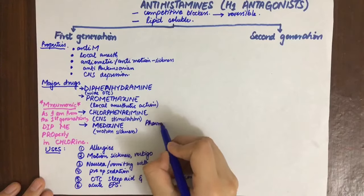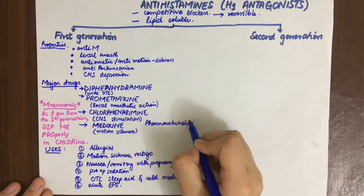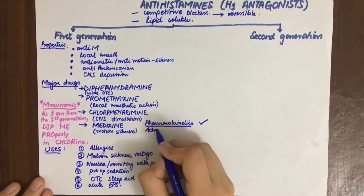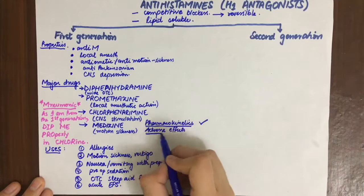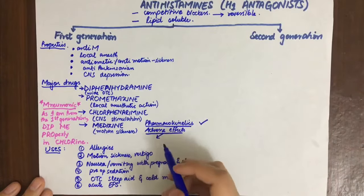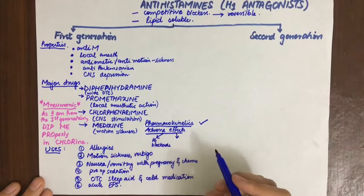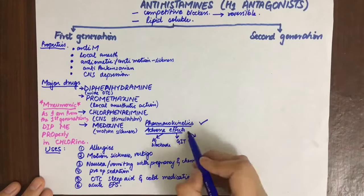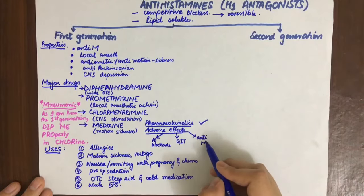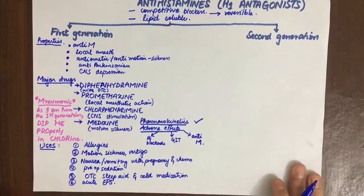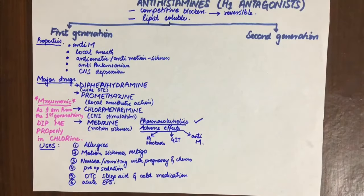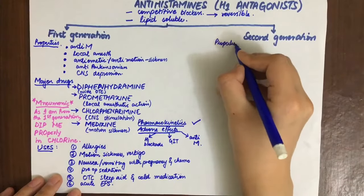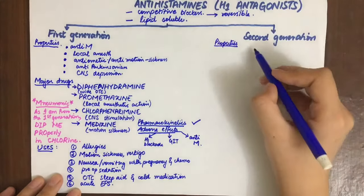Pharmacokinetics: first-generation antihistamines are well absorbed after oral and parenteral administration, widely distributed, metabolized in the liver, and excreted in urine. Adverse effects due to H1 blockade include sedation, drowsiness, lack of concentration, headache, and fatigue. GIT symptoms include nausea, vomiting, and loss of appetite, along with antimuscarinic effects.